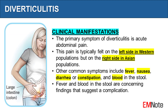Clinical Manifestations. The primary symptom of diverticulitis is acute abdominal pain. This pain is typically felt on the left side in Western populations, but on the right side in Asian populations. Other common symptoms include fever, nausea, diarrhea or constipation, and blood in the stool. Fever and blood in the stool are concerning findings that suggest a complication.